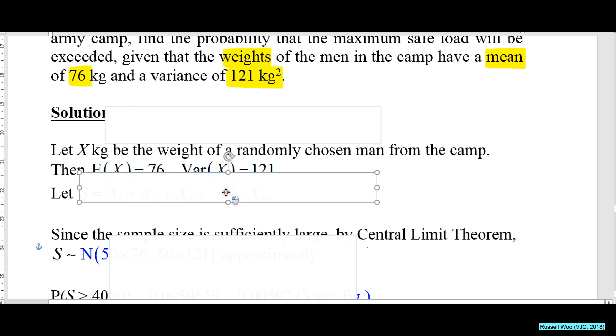Let X be the weight of a randomly chosen man from the camp. It is from the question that the mean of X is 76, the variance of X is 1.21.